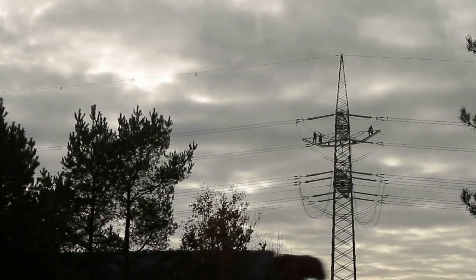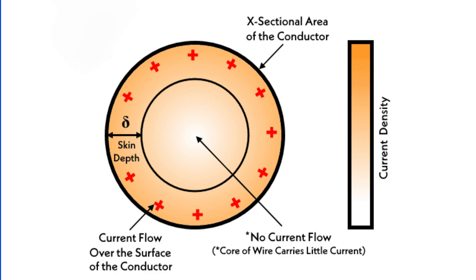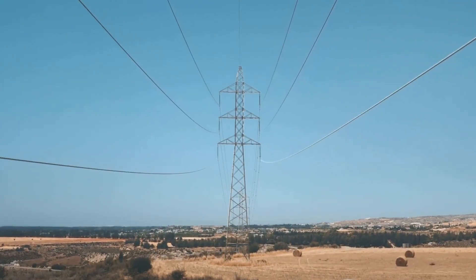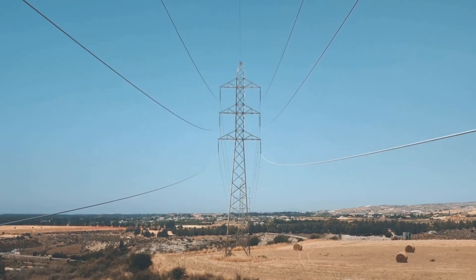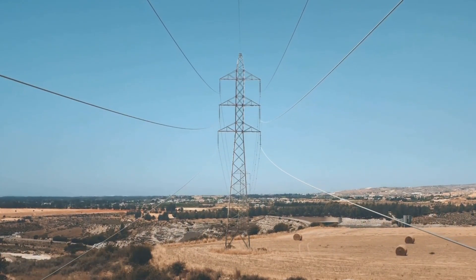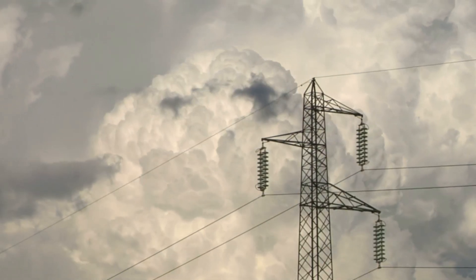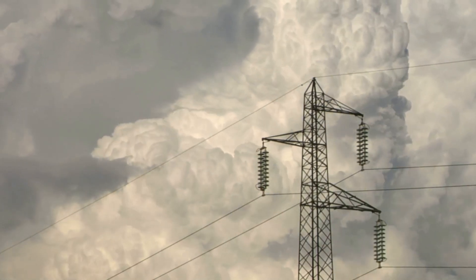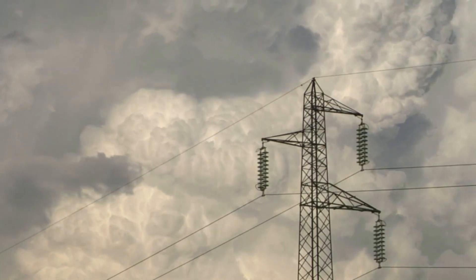The implications of this are quite significant. The skin effect reduces the effective cross-sectional area of the conductor available for current flow, which in turn increases the power losses and heating of the conductor. It also impacts the impedance of the transmission line, affecting the voltage and current distribution along the line. The skin effect becomes more pronounced at higher frequencies, larger diameters, and lower conductivities of the conductors.